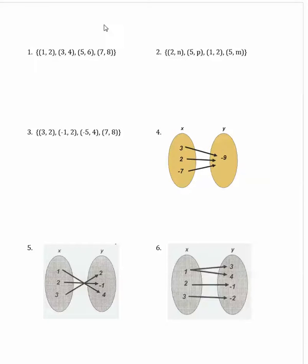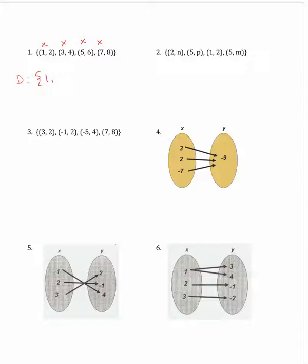In these examples we're going to find the domain and the range. Number one is a relation. A relation is a set of ordered pairs. In this set of ordered pairs the x-coordinates are 1, 3, 5, and 7. So the domain of the function is the set of the numbers 1, 3, 5, 7 — listed in order from least to greatest.